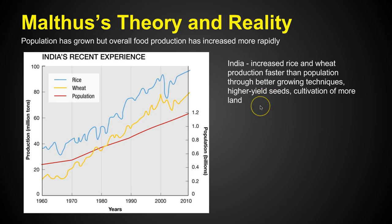In reality, population has grown, but food production has increased rapidly as well. In India, for example, rice and wheat production increased faster than the population grew, through the use of higher-yield seeds and the cultivation of more land. The graphic shows that rice and wheat production rose more steeply than population, though concerns remain about the long-term effects of genetically modified crops.